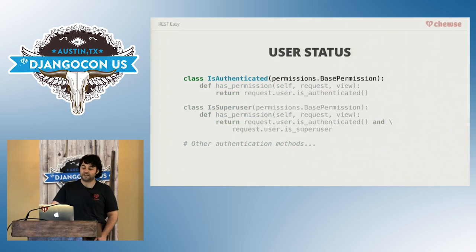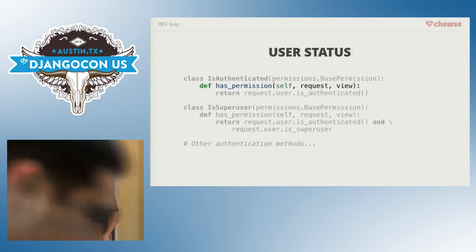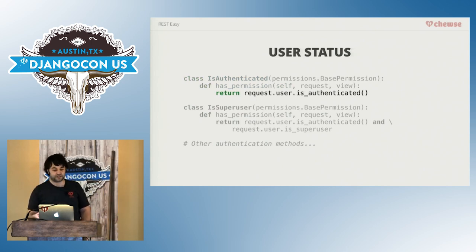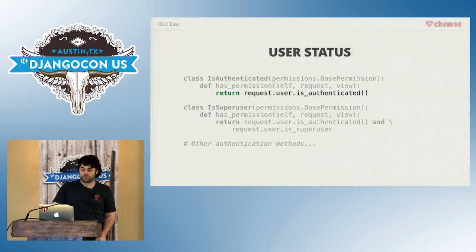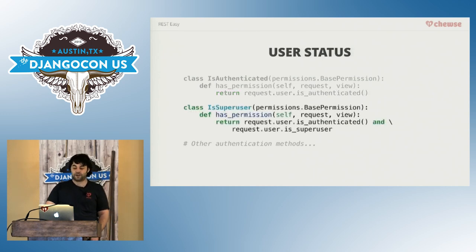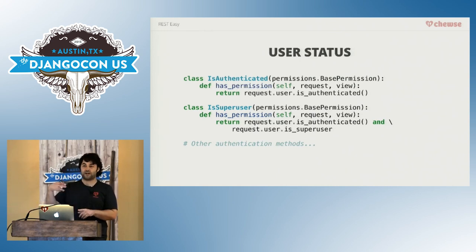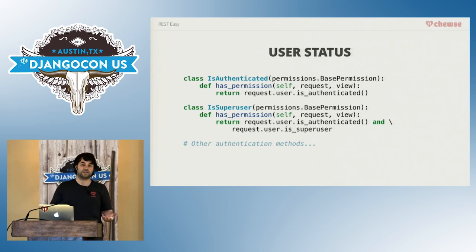You might have an isAuthenticated permission where hasPermission just checks: are you authenticated? Simple, easy to unit test, easy to reason about. You might have one for isSuperUser that checks the super user flag. And then all the other authentication methods — if you have Facebook authentication, you'd have some of these for Facebook; if you have a URL token as an authenticator, you'd have one of those — just really simple checks.